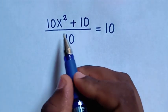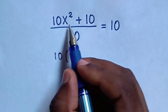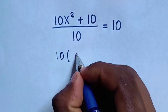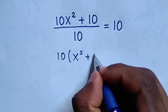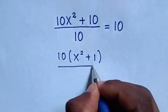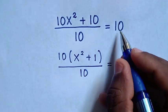So from the numerator 10 is common, so we take 10 out of bracket. Then 10x² divided by 10 is x² plus 10 divided by 10 is 1 bracket over 10 is equal to 10.